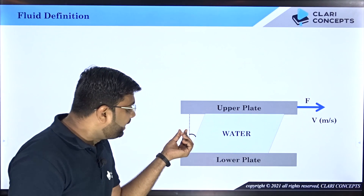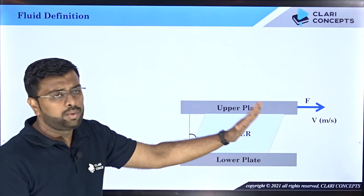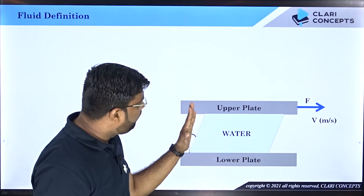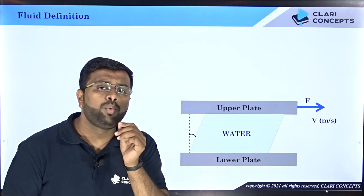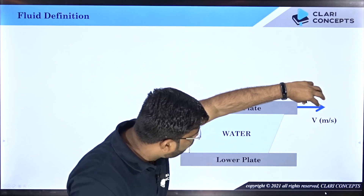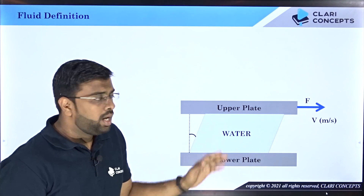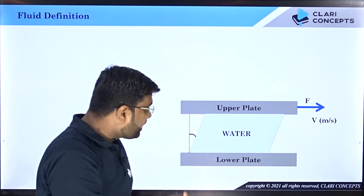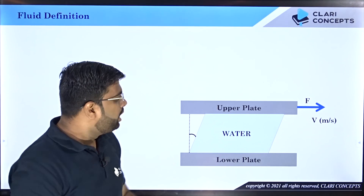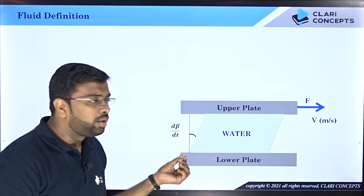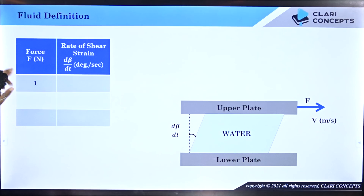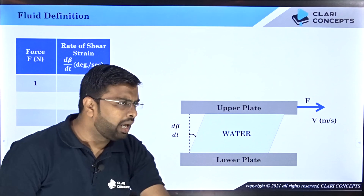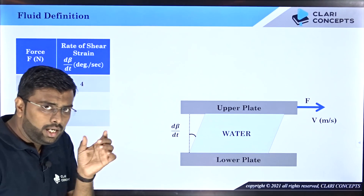What you will actually see is that with a particular force F, the angle is not fixed. Instead, the water continuously keeps deforming as long as the force is applied. The moment you release the force, deformation stops — but while the force is there, the fluid keeps deforming continuously. Since the deformation is continuous, what matters is the rate of deformation, d-beta/dt. For example, one newton might give a rate of four degrees per second — so in four seconds, total deformation is 16 degrees.